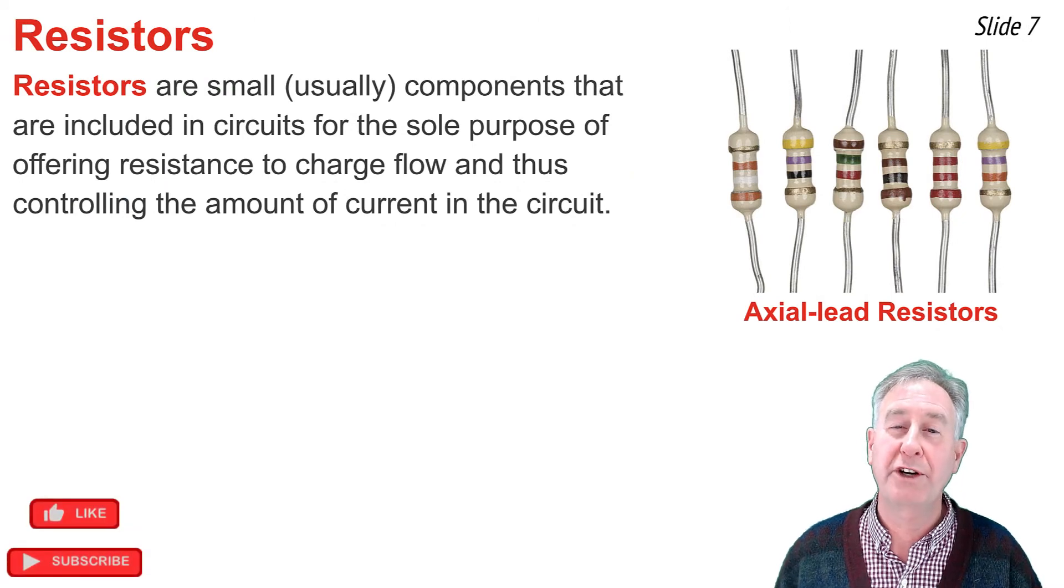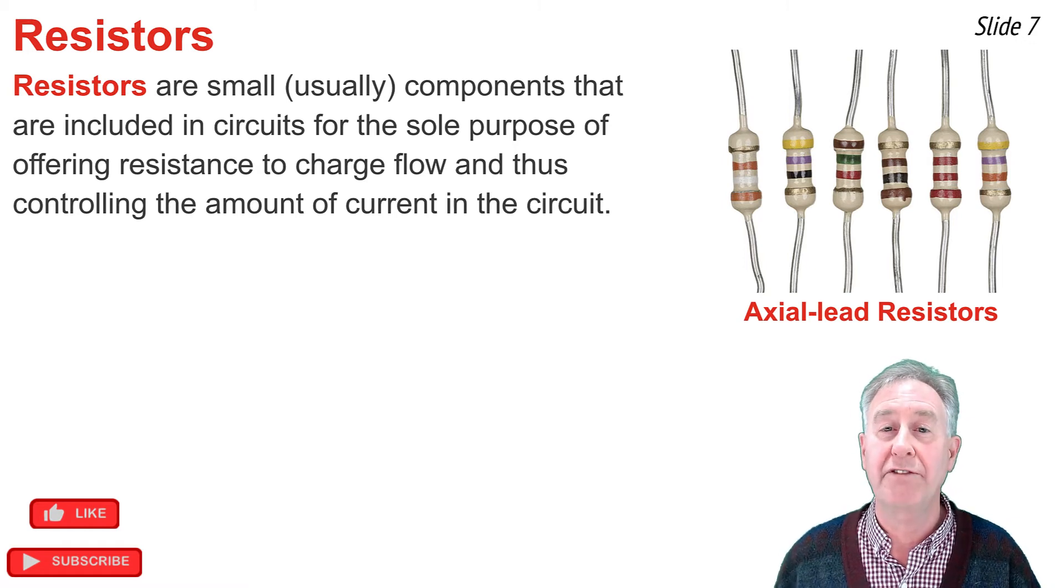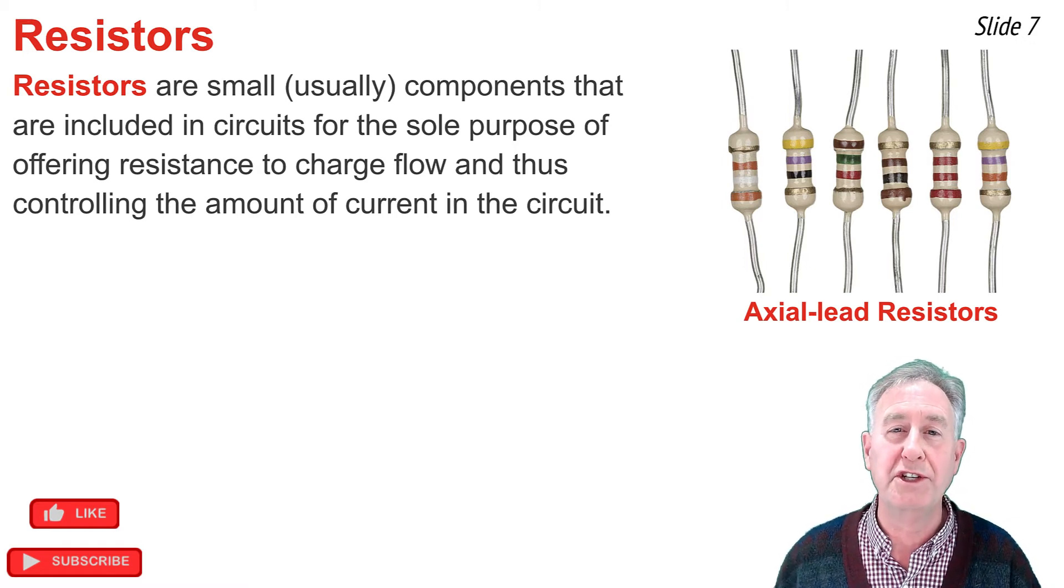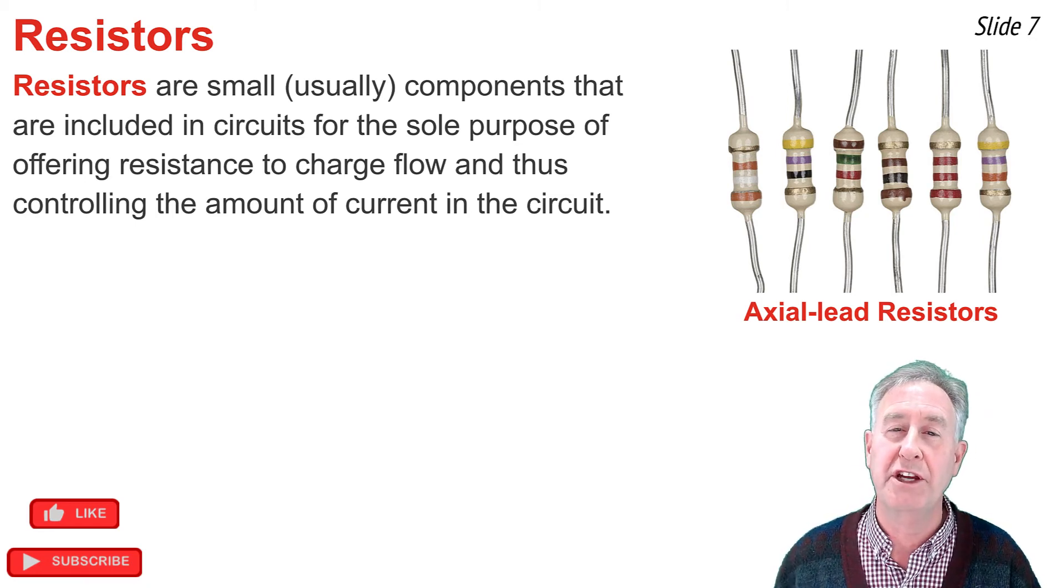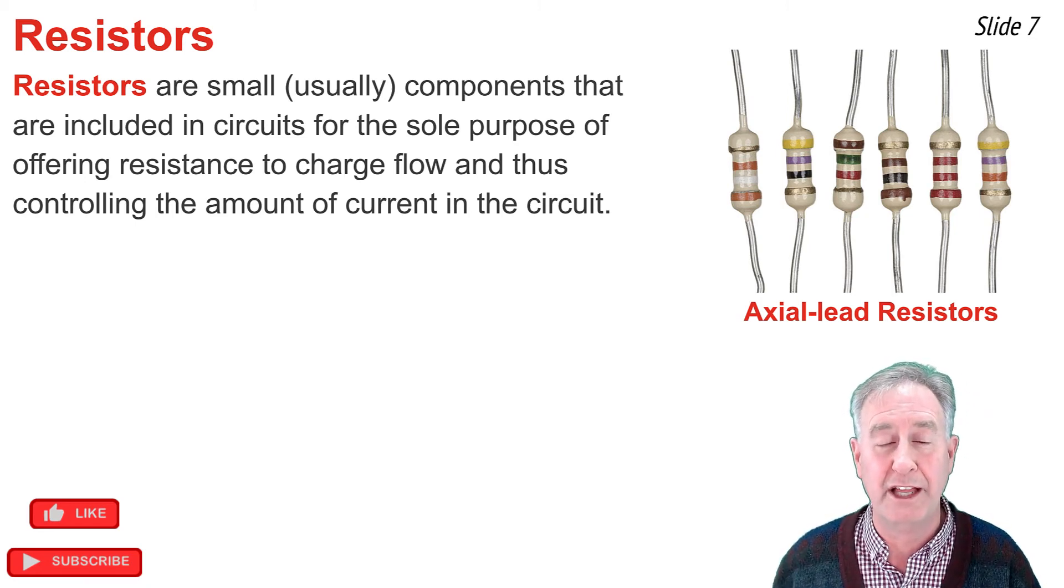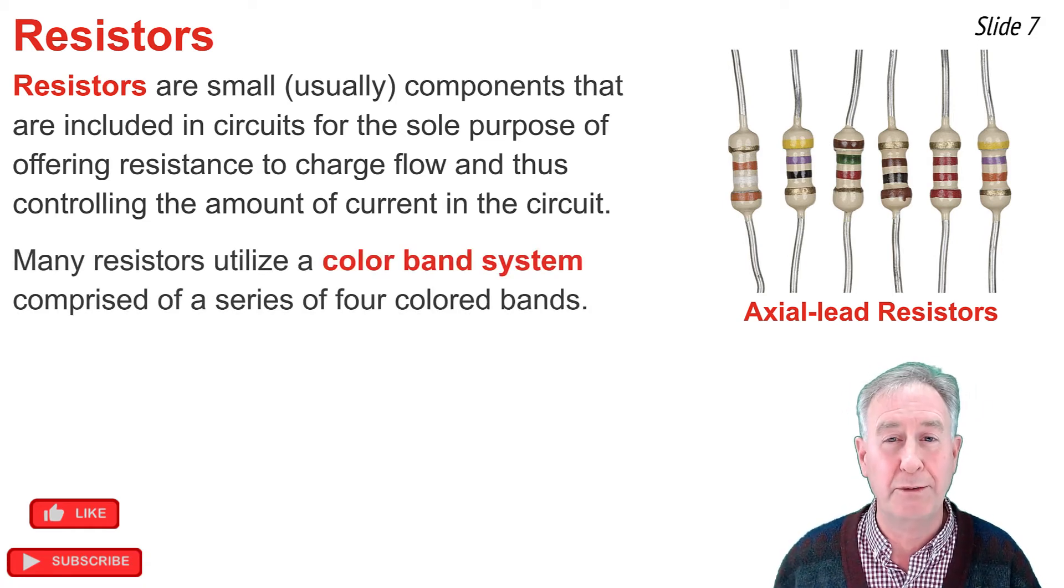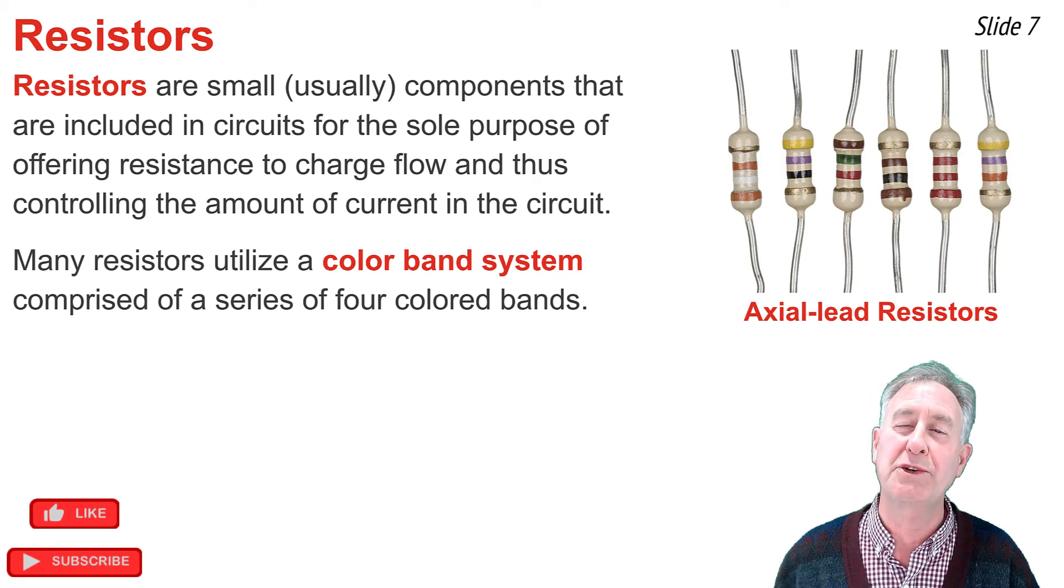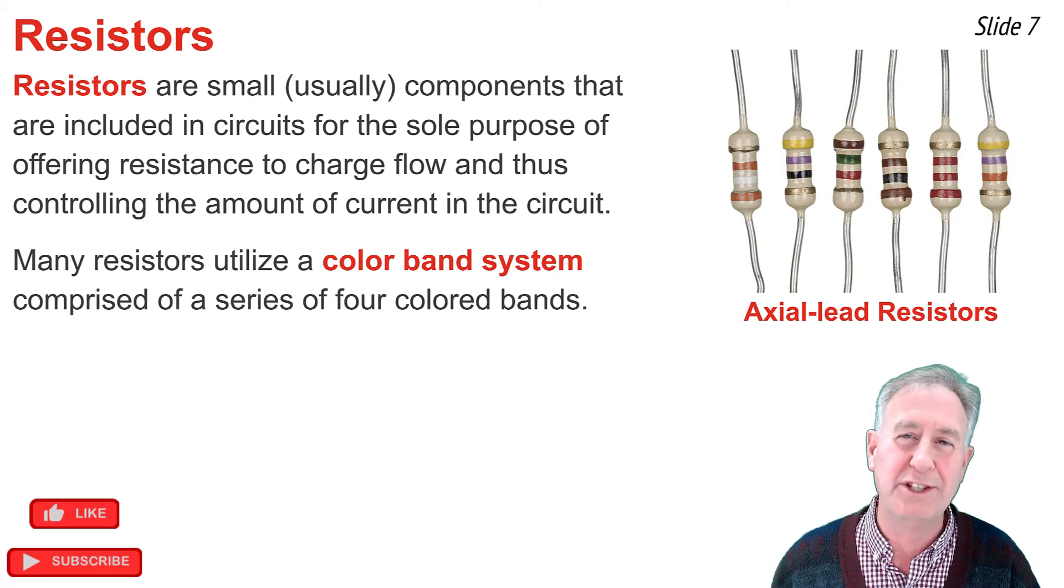Resistors are small components that are included in circuits for the sole purpose of offering resistance to the flow of charge. Manufacturers of devices often use resistors in various locations within the circuit in order to control the amount of current at that location within the circuit. The photo above illustrates a collection of resistors that you might have found used in a physics lab. These resistors have a color band system that is comprised of four different colored bands.